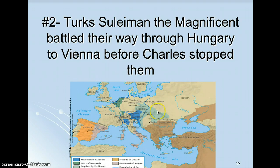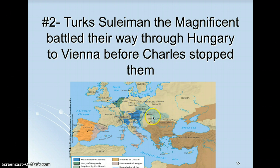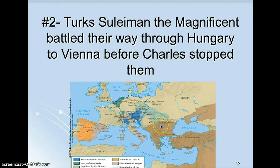Charles's second problem comes at him from the east: the Ottoman Turks. The Ottoman Turks are considered evil in the minds of Charles and everyone, because they're Muslim. Suleiman the Magnificent is the Turkish leader.